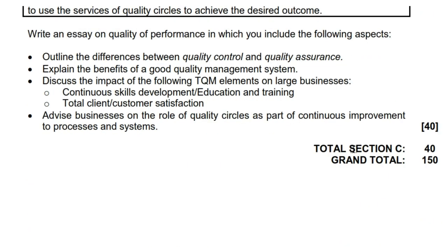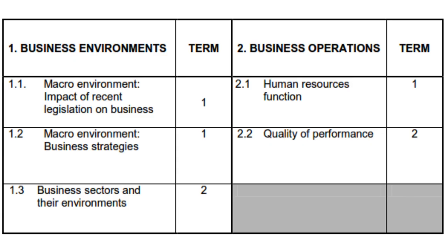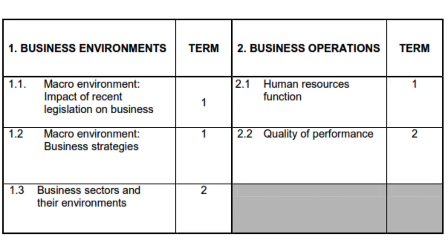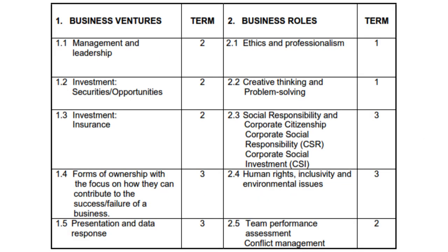We will start off by having a look at our topics. For paper 1, we have business environments and business operations, and for paper 2, we have business ventures and business roles. Between the two from each paper, which one do you understand more? Let us assume you prefer business environments for paper 1 and business ventures for paper 2.